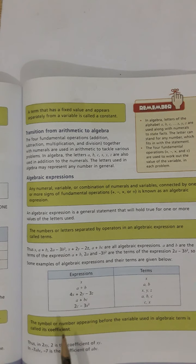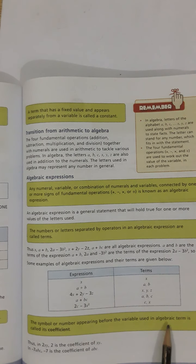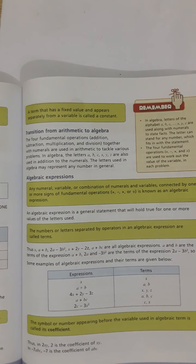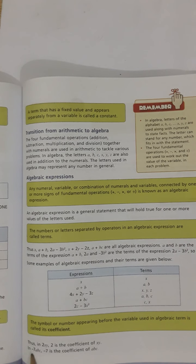The symbol or number appearing before a variable used in an algebraic term is called its coefficient. Variable se pehle jo symbol ya number appear hota hai algebraic term mein, woh coefficient kehlata hai. For example, in 2xy, the coefficient of xy is 2. Similarly, in minus 7abc, minus 7 is the coefficient of abc.